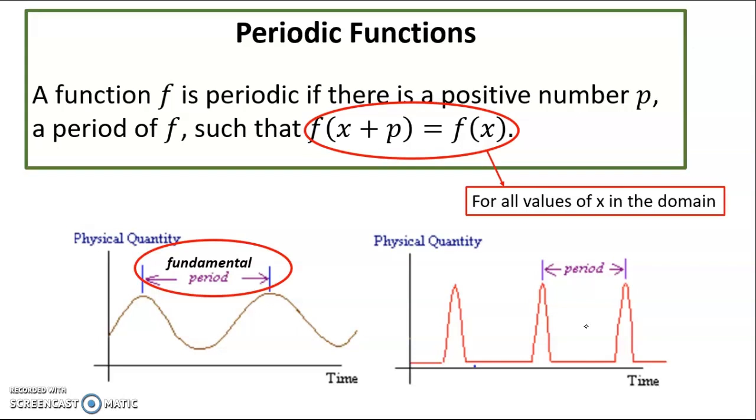A function is periodic if there's a positive number P, a period of f, such that that statement's true. What does that even mean? A period is a length or a cycle of a graph. So functions that are periodic, their graphs repeat.